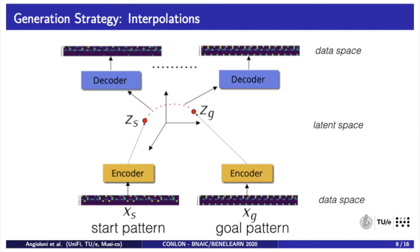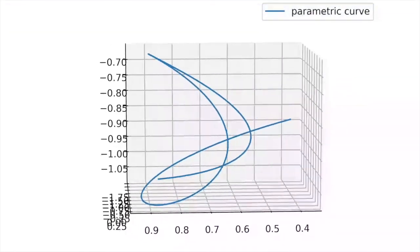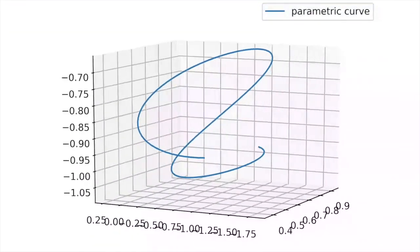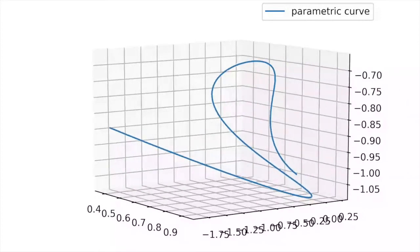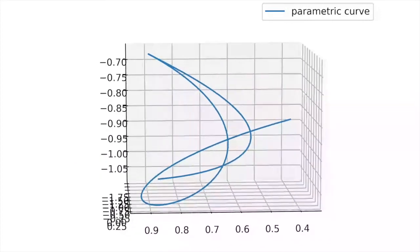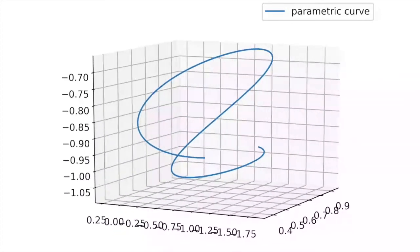When using autoencoders, we have the choice of picking a start pattern and a goal pattern and using the encoder to obtain a start and goal point in the latent space. Trajectories connecting start and goal are then computed with a linear or a spherical interpolation. For swirls, the latent trajectories are produced by taking real and imaginary parts of periodic complex-valued parametric functions, as shown in the graphic.